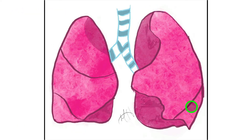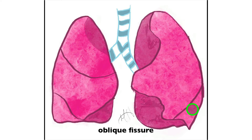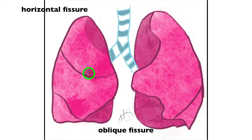The left lung has a superior lobe and an inferior lobe. The oblique fissure separates the superior and inferior lobes on both lungs. On the right lung there is also the horizontal fissure — it's more horizontal than the oblique fissures. Two fissures on the right because there are three lobes; one fissure on the left because there are only two lobes.